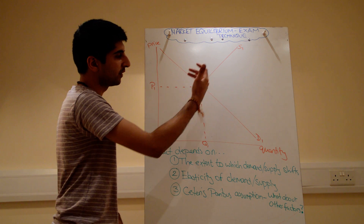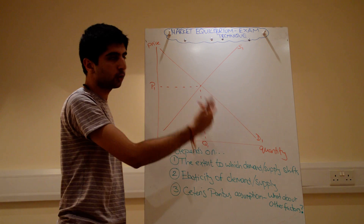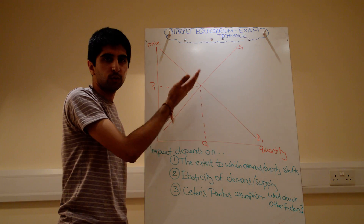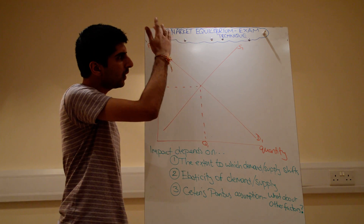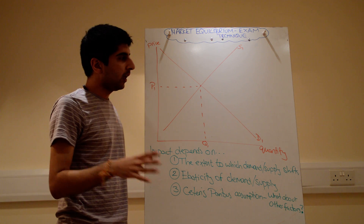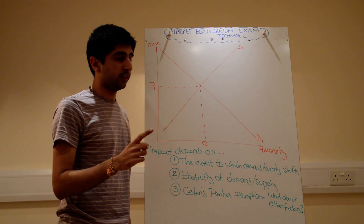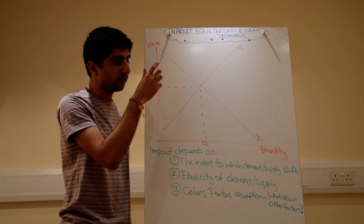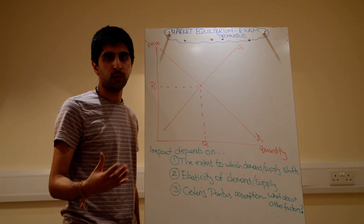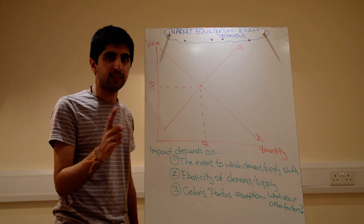We know the basics of one curve shift: if demand shifts to the right, price will increase and quantity will increase. If supply shifts to the right, price will fall and quantity will increase. I'm going to focus on when two curves shift in this video, but everything I'm going to say applies if only one curve was shifting anyway — you'd still go through this exact technique in exactly the same way.